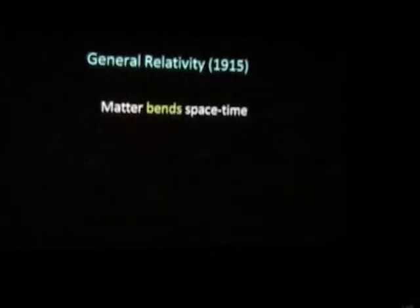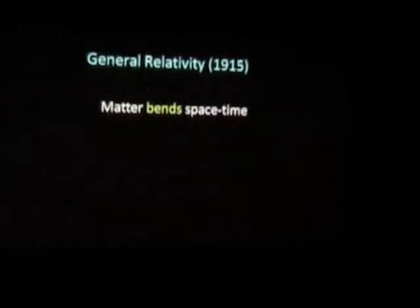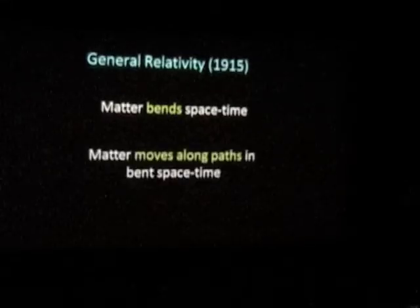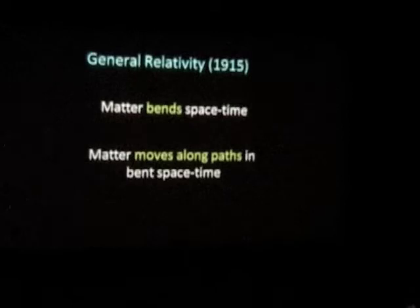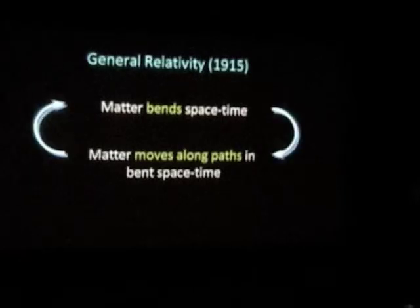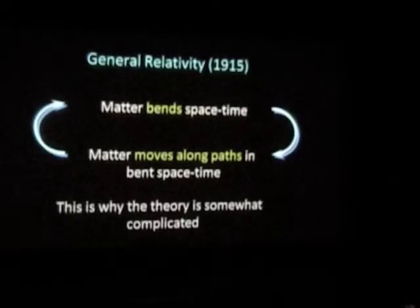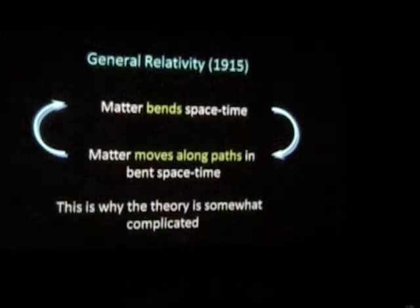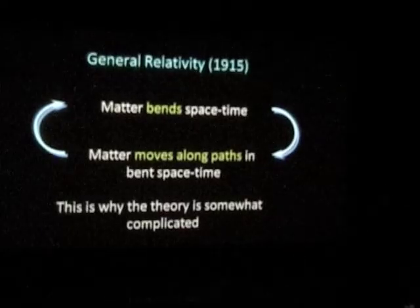Now we've got to do general relativity. Matter bends space-time — notice it's not bending space, it's not bending time, it's bending space-time. And then the matter moves along paths in bent space-time. The challenge is making that self-consistent, which is a highly non-linear problem — that's why the theory is a wee bit complicated. But that's what you've got to do to find a four-dimensional space with those properties. Now that you've understood all of that, the rest is easy, because now we've got to look at black holes.